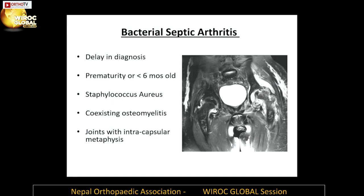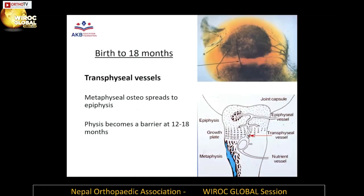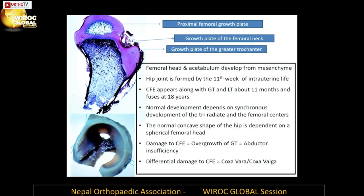A co-existing osteomyelitis can lead to septic arthritis in joints that are intracapsular. From birth to 18 months, there are transphyseal vessels that can take an osteomyelitis up into the joint and spread to the cartilage, causing joint destruction. Around one and a half years of age, the physis becomes a barrier to this.